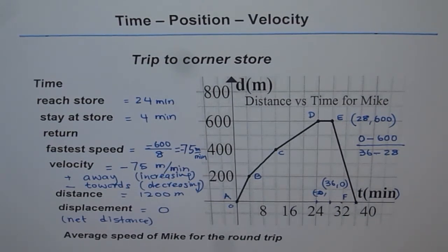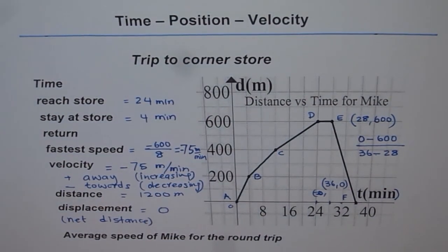With this example, you understand that from a graph we can calculate average speed, we can calculate velocity, we can find distance and also displacement, in addition to reading distance and time and calculating slope and velocity. Thank you. Let's move on to more examples.